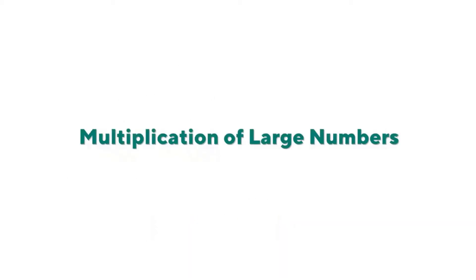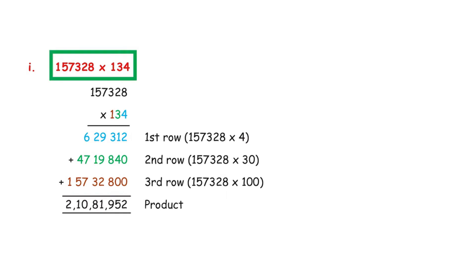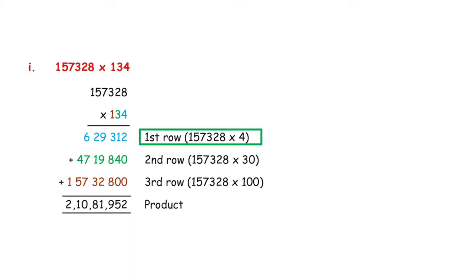Now let's learn about multiplication of large numbers. The cost of one bike is 1,57,328 rupees. What is the cost of 134 such bikes? This is a practical application of multiplication. Let's do the multiplication: 1,57,328 × 134. The first step is 1,57,328 × 4, which gives 6,29,312 in the first row.